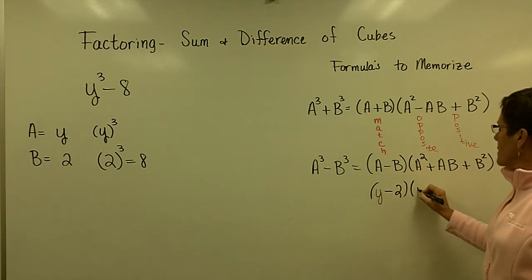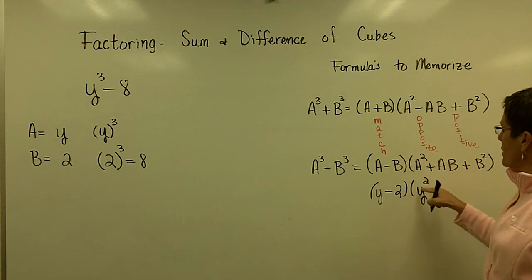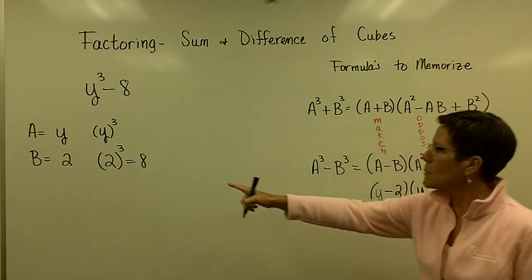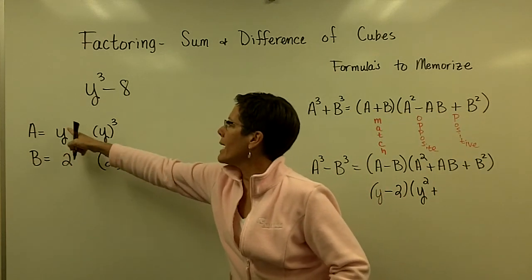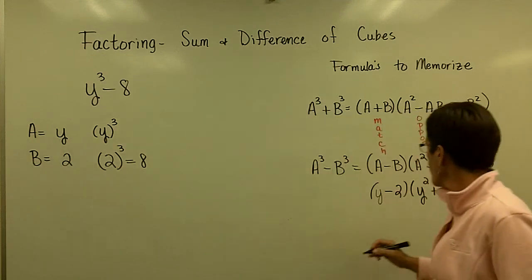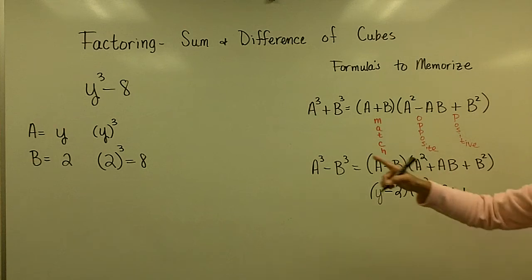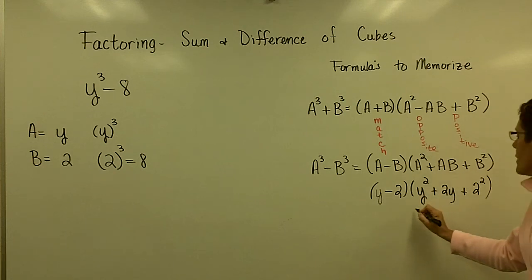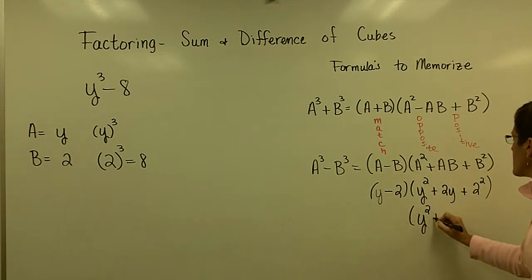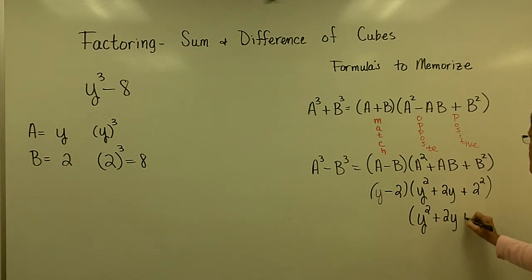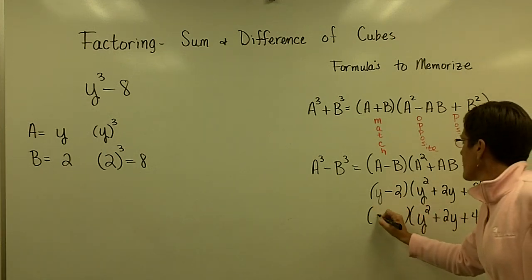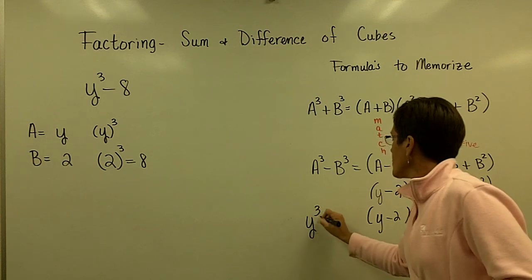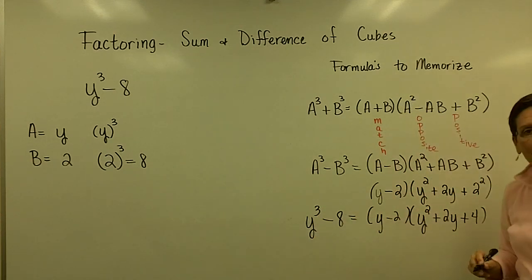Now for the trinomial: my A value is y — I square it to get y squared. There's always a plus sign in the trinomial. Then A times B gives y times 2, or 2y. Then my B value is 2, and 2 squared is 4. So the factored form of y cubed minus 8 is (y − 2)(y² + 2y + 4). That's the factored form because it was the difference of cubes.